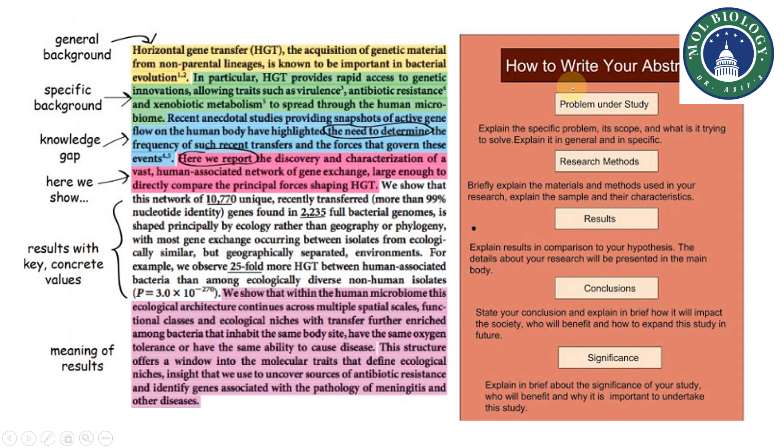To design your abstract, identify your problem, explain your research method, explain results and conclusions. At the end, explain the importance or significance. Papers without significance are usually rejected by editors. You have to mention how this study can help other scientists or readers and the significance of your study.